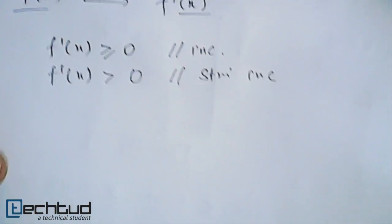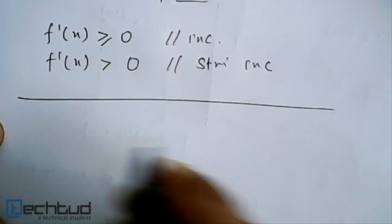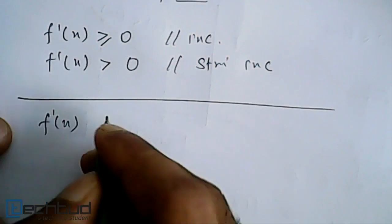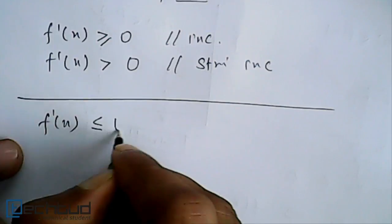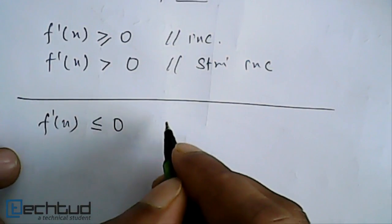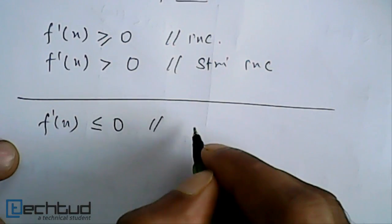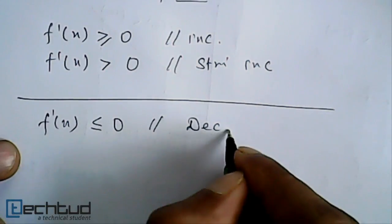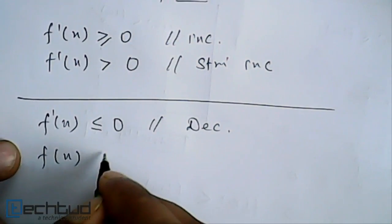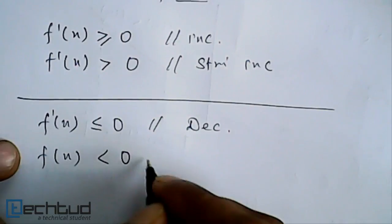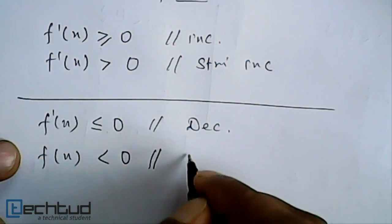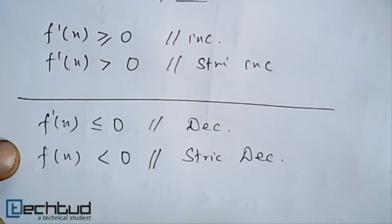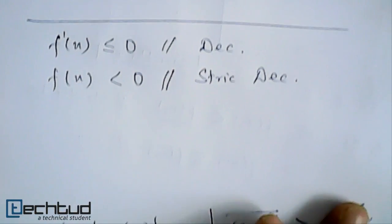Similarly for decreasing, if f'(x) is always less than or equal to 0, we say it is decreasing. But if f'(x) is always strictly less than 0, then we say it is strictly decreasing. So these are the conditions. We also have one corollary — let's understand it with an example first.